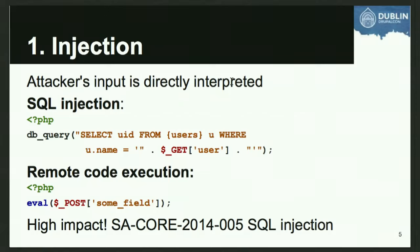OWASP Top 10 number one - the thing you must avoid at all possible cost - is broadly termed injection. Injection means the attacker is able to send some data to your site and that data is executed as a programming language or as SQL. Two distinct types are SQL injection, where the attacker's input is executed as SQL, and PHP code injection where someone is able to cause PHP code to be executed. These are both very bad - they will likely mean all the data on your site can be disclosed and the attacker may take over your site. But they're relatively easy to avoid in the Drupal context.